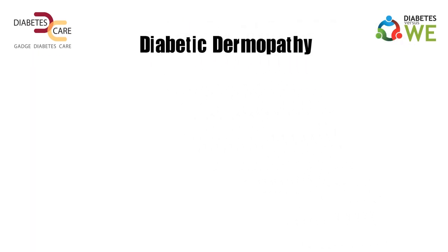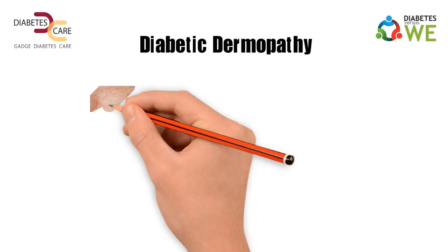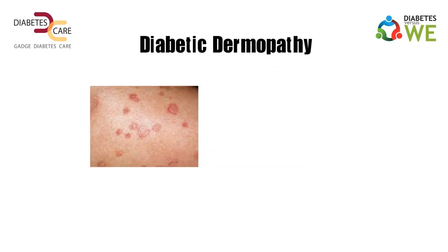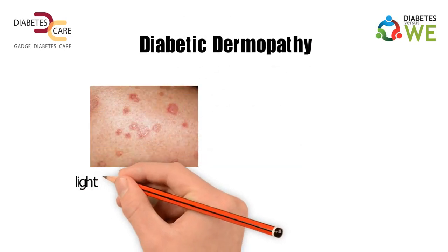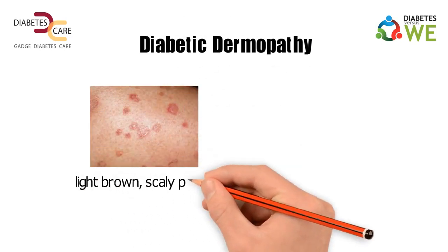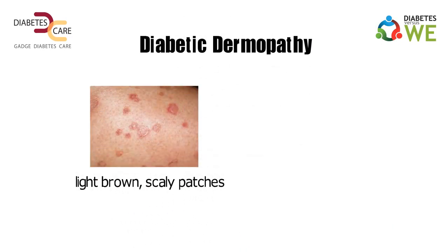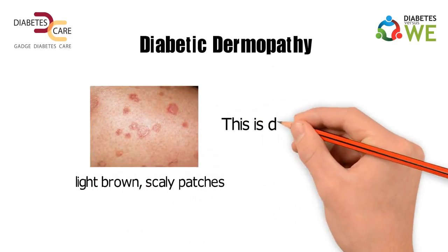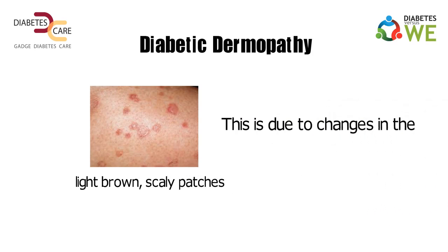Diabetic dermopathy often looks like light brown, scaly patches. This is due to changes in the small blood vessels.